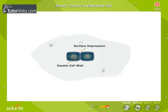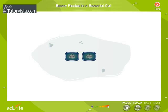A double wall is formed in the furrow between the daughter protoplasts. The daughter cells separate due to the development of turgor in both the cells.